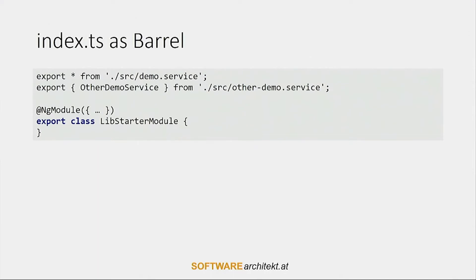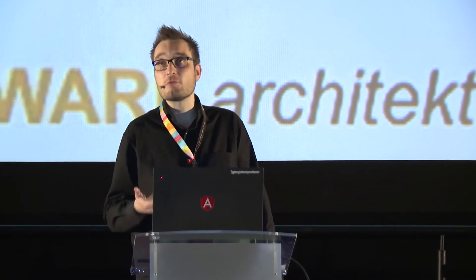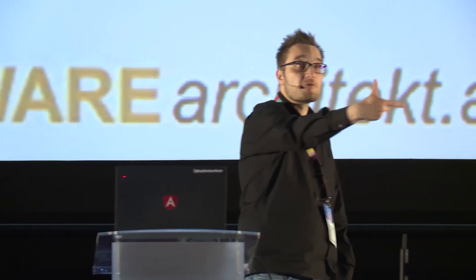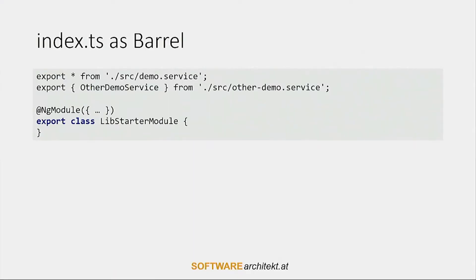This is what a barrel looks like. Most of the time, a barrel contains those export-from statements, which is a mixture of an export and an import statement. In the first line, I'm importing everything from the demo service and re-exporting it through this barrel. For the other demo service, I'm just re-exporting the class. In addition to that, I'm exporting an Angular module that holds all the Angular building blocks my library provides.